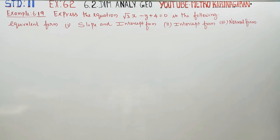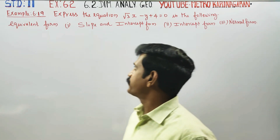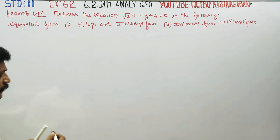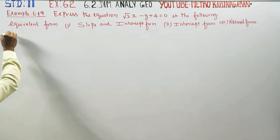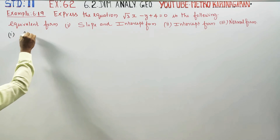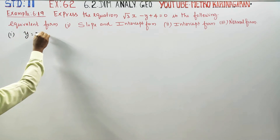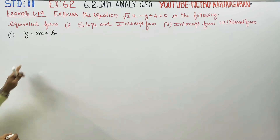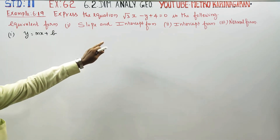Dear Learn Standard students, in example 6.19, express root 3x minus y plus 4 is equal to 0 in slope-intercept form. Subdivision 1: slope-intercept form, in the style y is equal to mx plus c, or y is equal to mx plus b. This is the slope-intercept form.